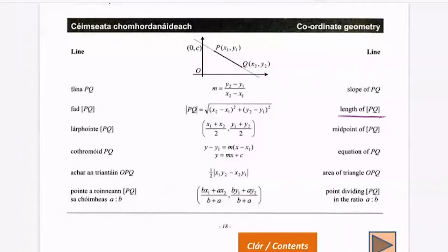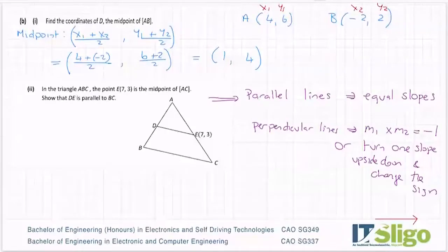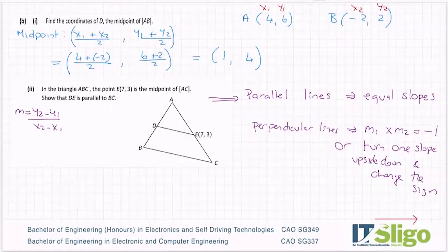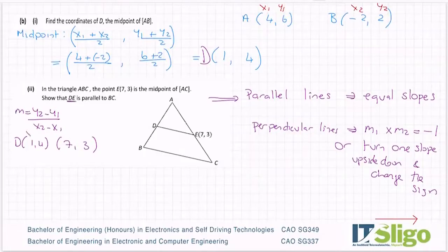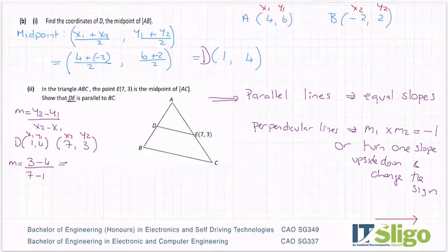So I'm going to get the slope of DE and the slope of BC and show that they're equal. Slope is given the letter m — don't confuse it with midpoint. Slope m = (y2 minus y1) over (x2 minus x1). If I'm going to get the slope of DE, I write down point D, which was the midpoint (1,4), and E is the point (7,3). Label them x1, y1, x2, y2. So (y2 minus y1) over (x2 minus x1): hit the fraction button, 3 minus 4 on top, 7 minus 1 on the bottom — I'm getting minus one sixth.